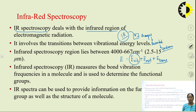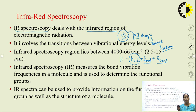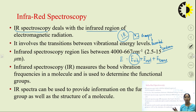IR spectroscopy measures vibration between bonds — it measures vibrational frequencies in the molecule, which is useful to determine functional groups. If I have a compound whose functional group is unknown and I put this compound in an infrared spectrophotometer, when I obtain the spectrum I will be able to find the functional group of that particular compound.